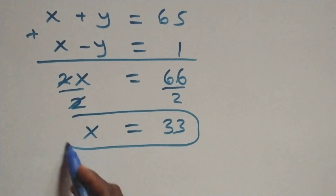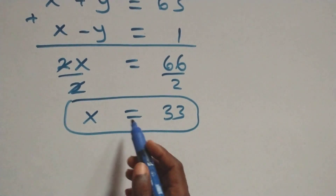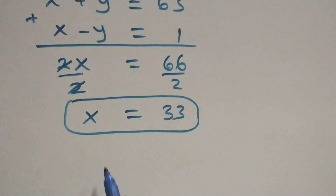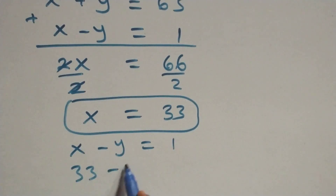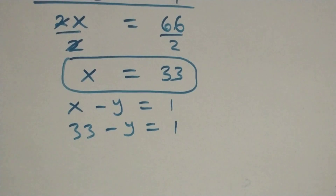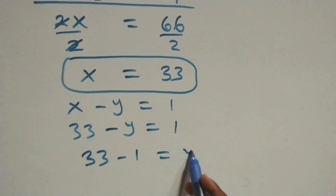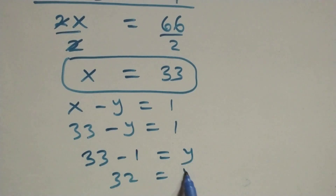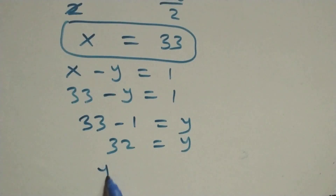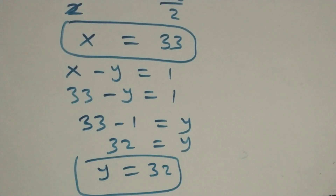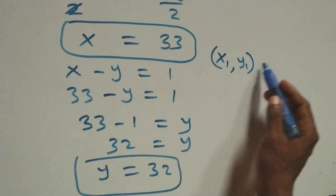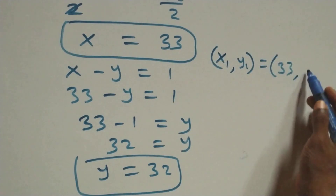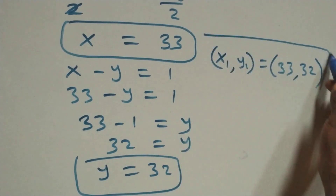With x equals 33, we substitute into equation 2 (x minus y equals 1): 33 minus y equals 1, so y equals 33 minus 1, which is 32. Our first set of solutions is x₁, y₁ = (33, 32).